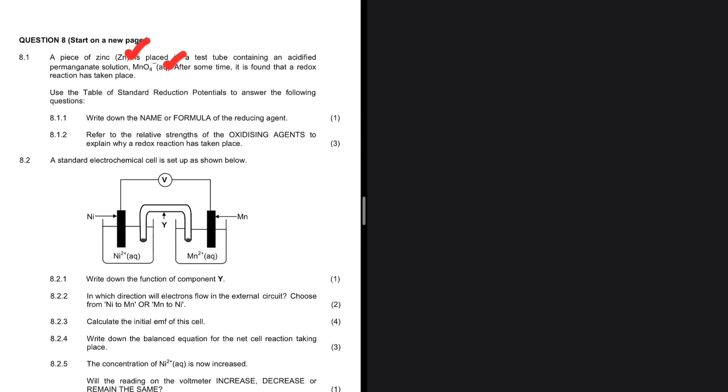Use the table of standard reduction potentials to answer the following questions. Write down the name or formula of the reducing agent. On your table of standard reduction potentials, you have your reducing agents on the right and your oxidizing agents on the left. It should be easy to see that the reducing agent is zinc.